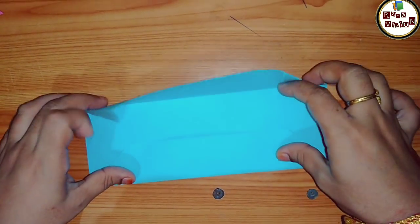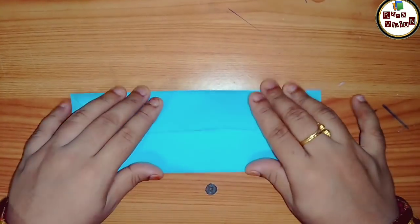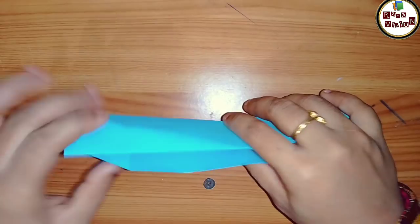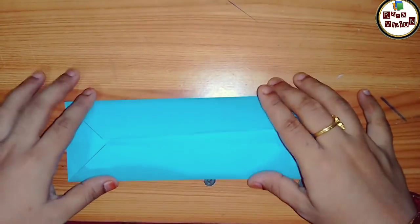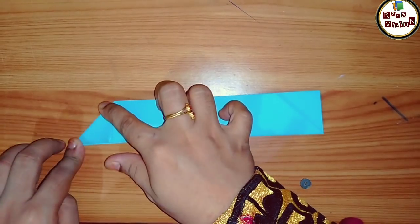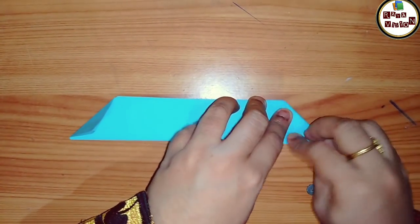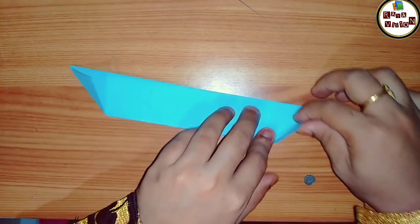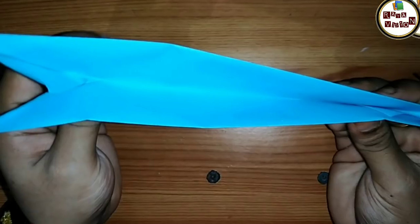After that, just fold the paper from two sides like this. Now you just open it in an inverted way. Now you have to fold one triangle from each corner like this, and after finishing it, fold it backward also.